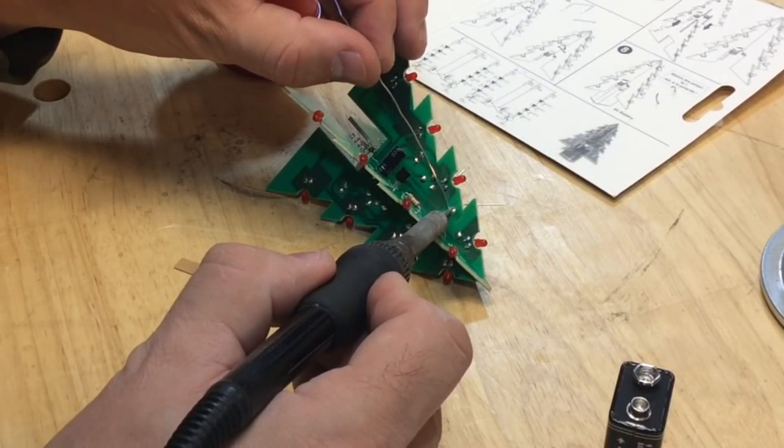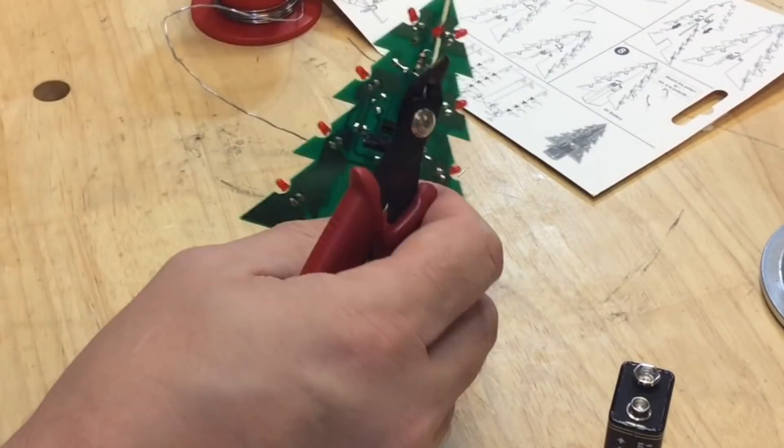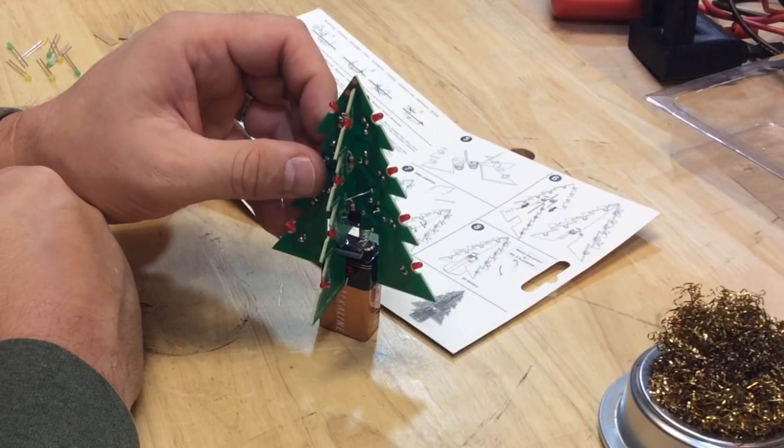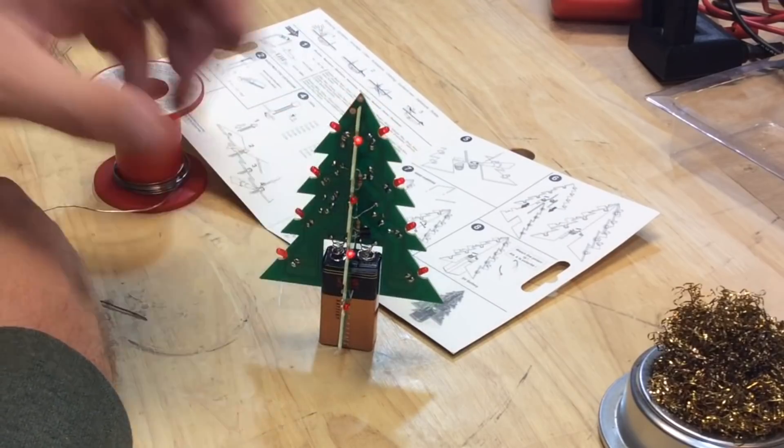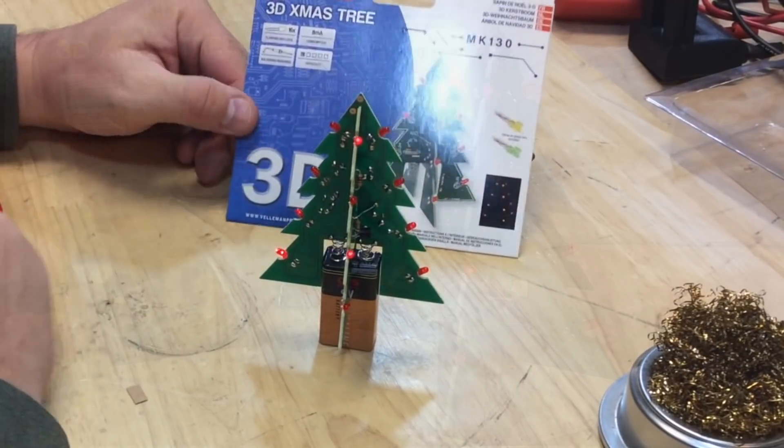So I soldered these—there's one for ground and there's one for power. Clipped those off, and this thing was ready to test as a full Christmas tree. I set it on the battery and everything worked. So here it is, the 3D electronic Christmas tree. It came out great.